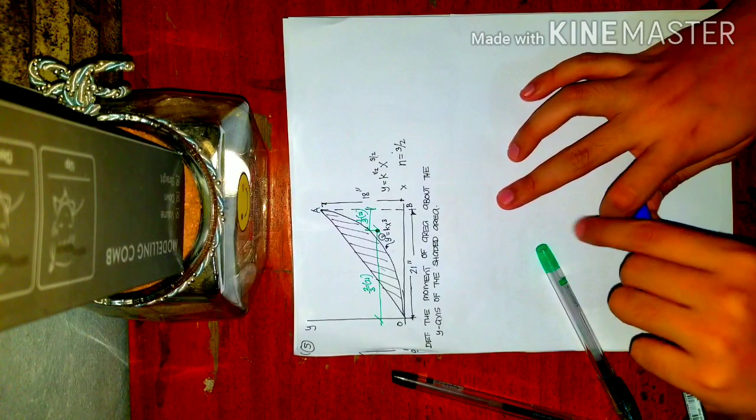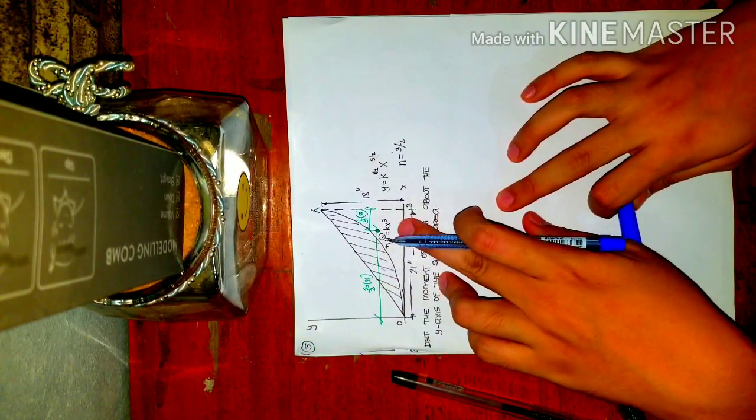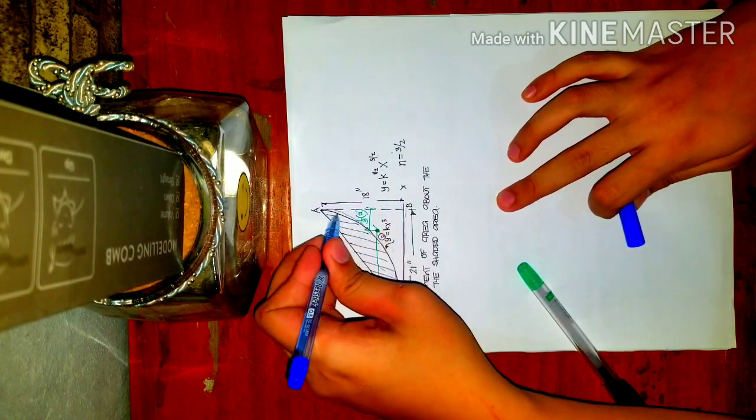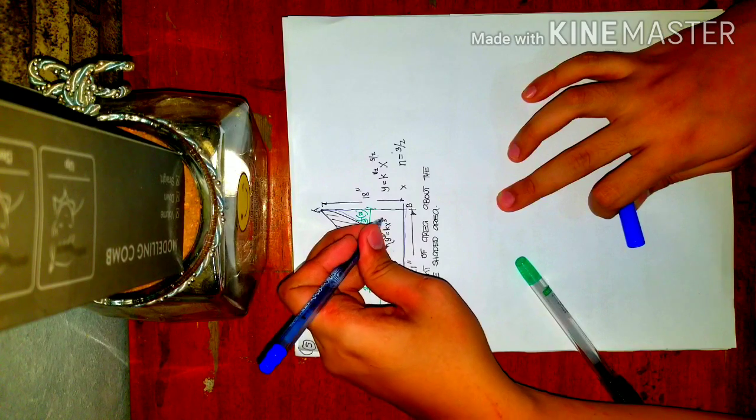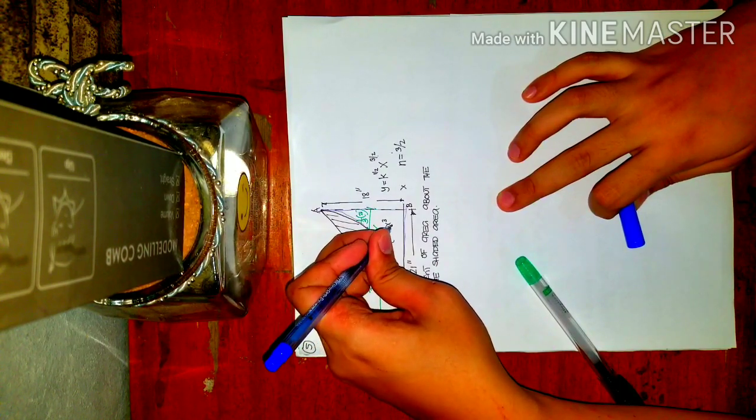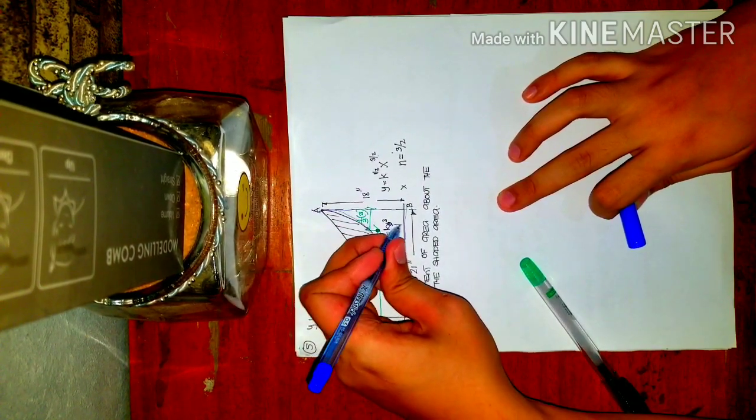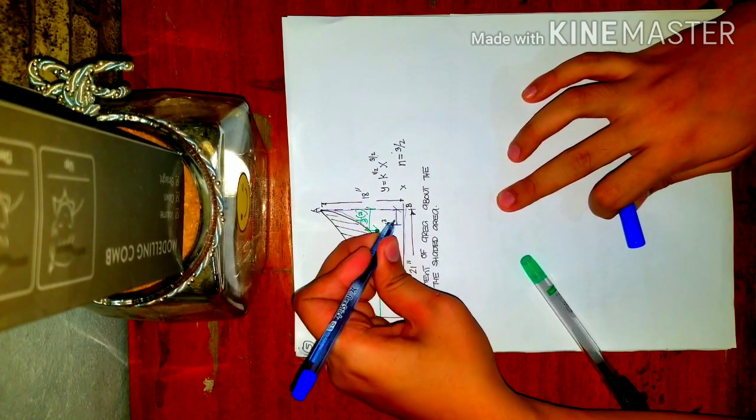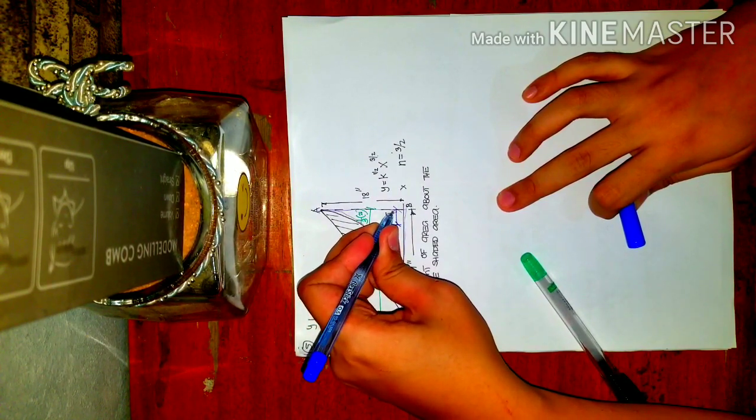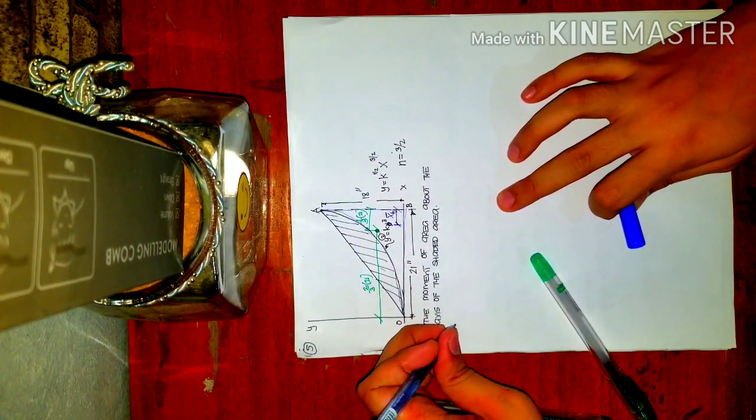And then next will be the value of the centroid of this trapezoid. Again, you just subtract the trapezoid. Let's just say the centroid of the trapezoid is here. How do we get the x bar of the trapezoid?